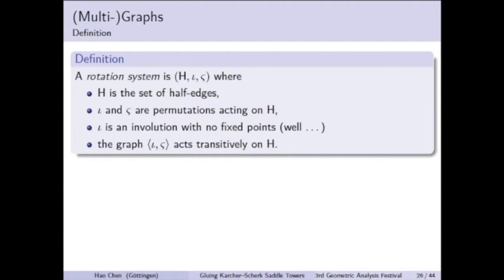Another requirement is that the group generated by iota and sigma should act transitively on the half-edges. From a rotation system, it is very easy to recover a graph.